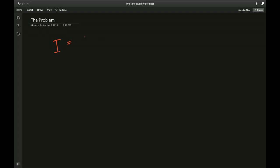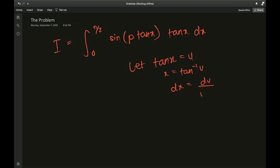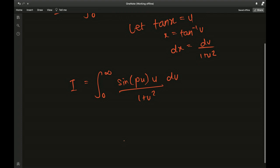Like always, let's call the integral I equals integral from zero to pi over two of sine of p times tangent of x, times tangent of x dx. Notice the tangent - a really good thing that anyone can do at this point is let tangent of x equal u. So x would be the inverse tangent of u, dx would be du over 1 plus u squared. Upper and lower bounds become zero to infinity, giving us the integral from 0 to infinity of sine of pu times u du divided by 1 plus u squared.